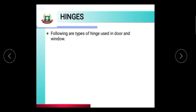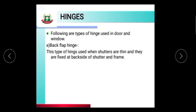Now we discuss about hinges. The following are types of hinge used in doors and windows. Back flap hinge: this type of hinge is used when the shutter is thin. They are fixed at the back side of the shutter and frame.